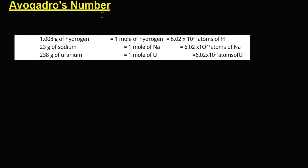Students, today we discuss Avogadro's number. We have learned in the previous lecture about atomic mass unit — a particle which is very difficult to weigh. So we have a standard unit called atomic mass unit, and the mole concept. If we express this weight in grams, we give one mole. If we express the mass of an atom in grams, we say one gram or one mole of that atom. If we express the molecular mass in grams, we have one gram molecule or one mole of that molecule.